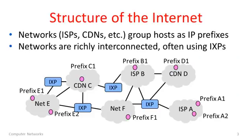Let's drill down on the overall formulation by looking at the structure of the internet. Here's a picture of the internet architecture showing a series of different networks — 1, 2, 3, 4, 5, 6 different networks that are connected. The networks act as sources and sinks for traffic. They have different prefixes, which are blocks of IP addresses, and these are all the sources and destinations on the networks.